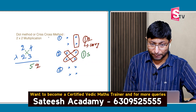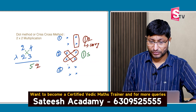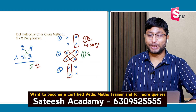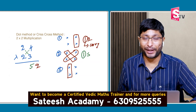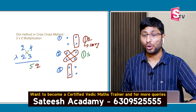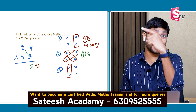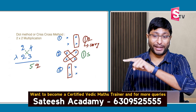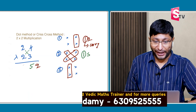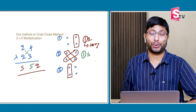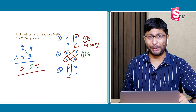Step 3: multiply tens place into tens place. 2 × 2 = 4. Already 1 carry, so 4 plus 1 = 5. The answer is 552. Simple!